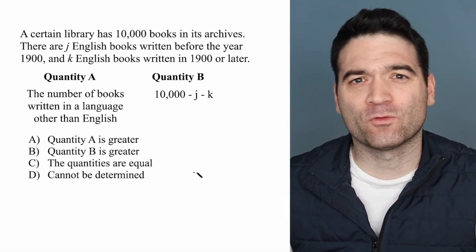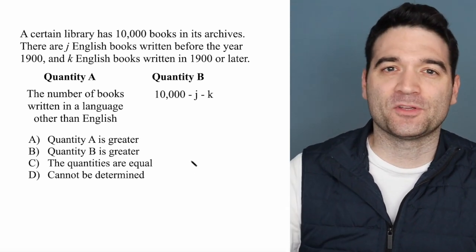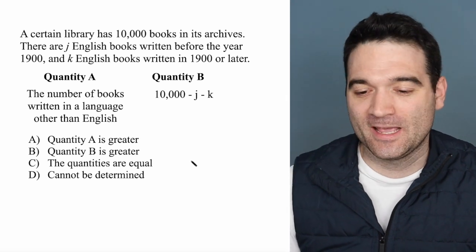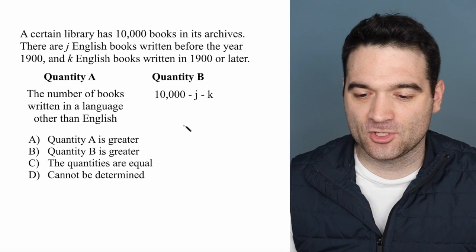Well, this is what's called an overlapping set question. You could also call it a categories question because you have multiple different categories of books that overlap with each other. And when I get a question like this, I like to represent it with a matrix. Let me show you what I'm talking about. So I'm going to draw a matrix right here.